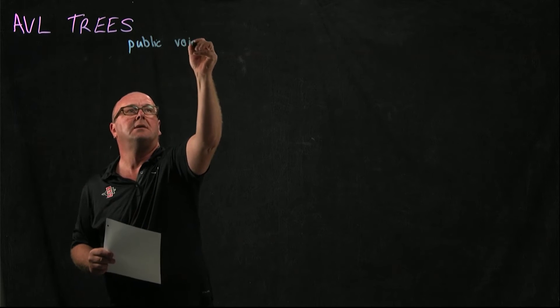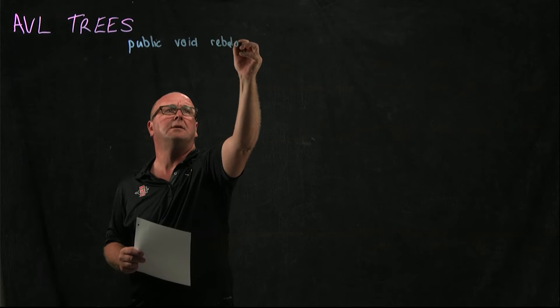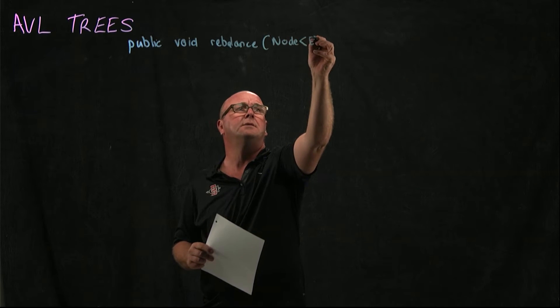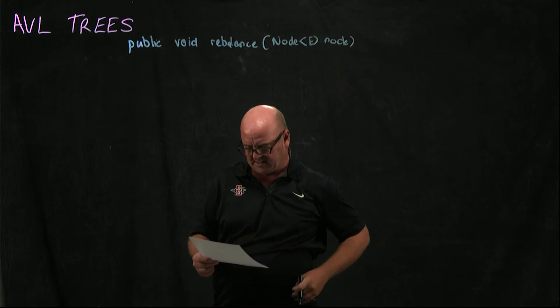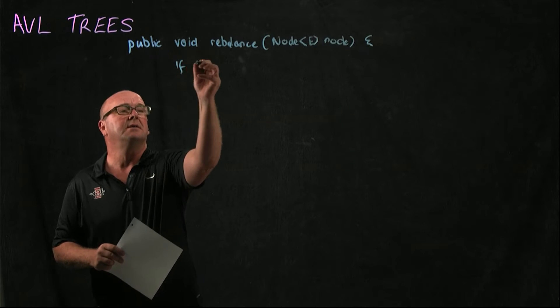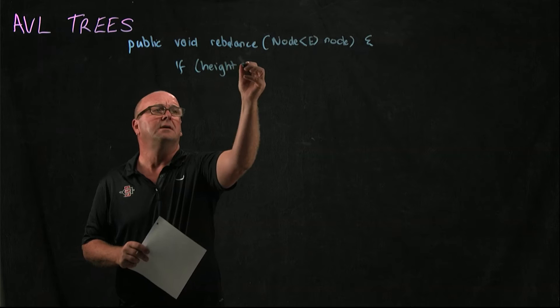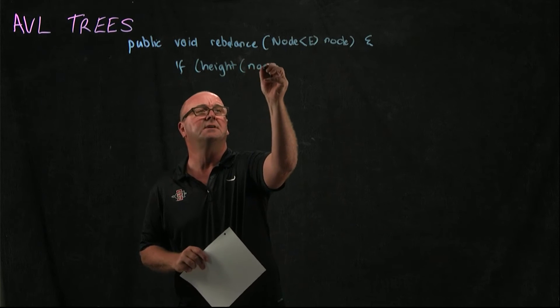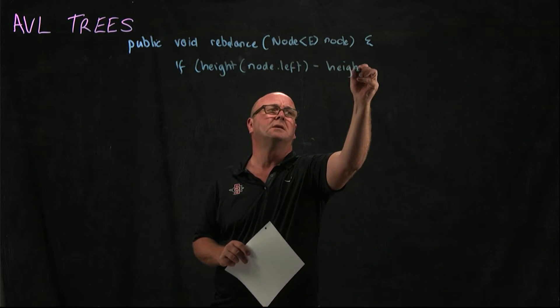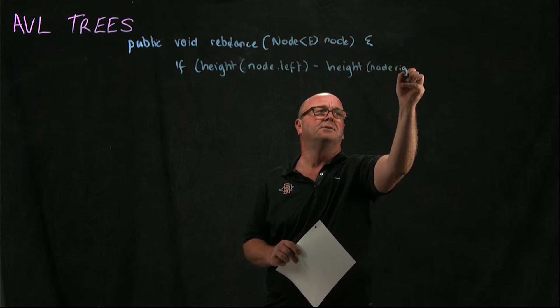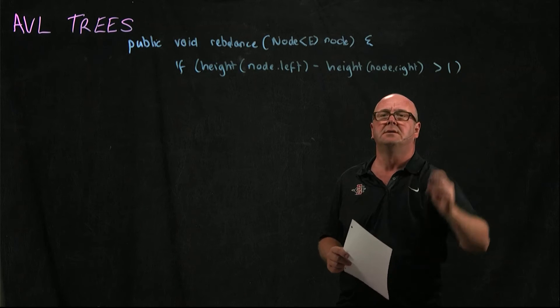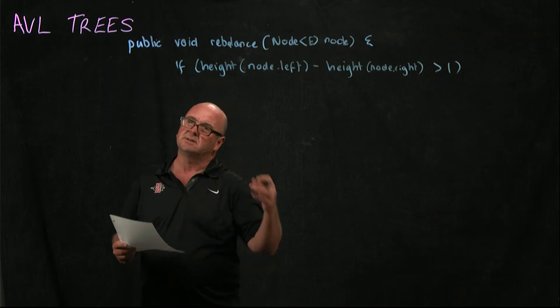We start with our rebalance method. Here's rebalance. We're going to take a node and we're going to look at the height of the subtrees. If height of node.left minus height node.right is greater than one, that means our left subtree is much longer than our right subtree.